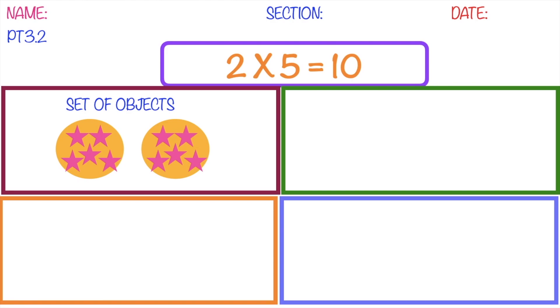Then after that, on the second box, we're going to illustrate the multiplication sentence that you created using repeated addition. So we have 5 plus 5 equals 10.